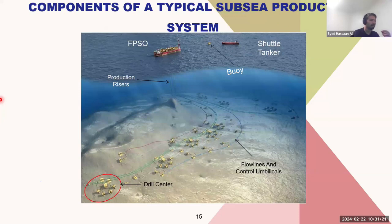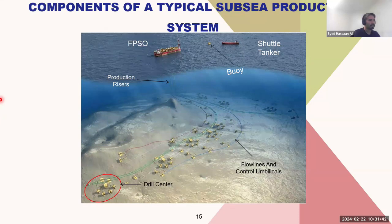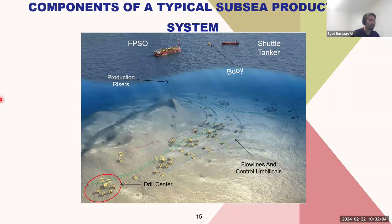A shuttle tanker is used when storage on the FPSO reaches a certain level — it offloads hydrocarbons and takes them to an onshore facility. Shuttle tankers are more commonly used in countries where there are no pipelines or onshore infrastructure. The shuttle tanker docks to a buoy on the surface and uses hoses or pipes to transfer oil from the FPSO, then disconnects and takes the oil to market.